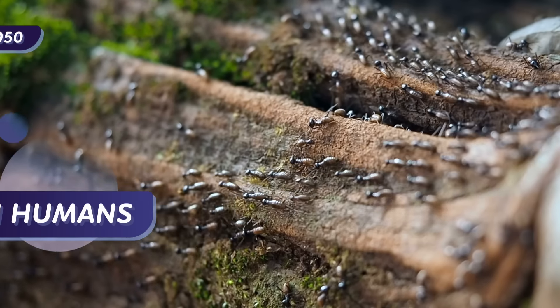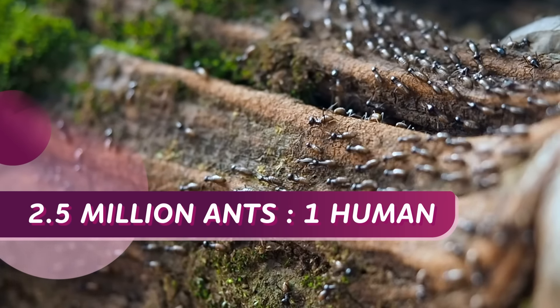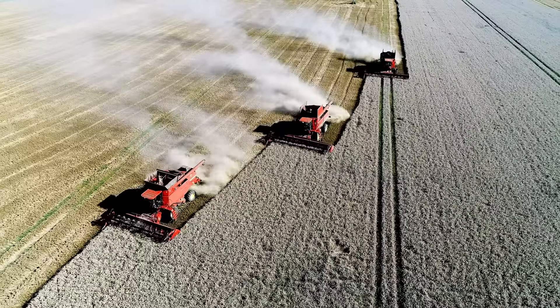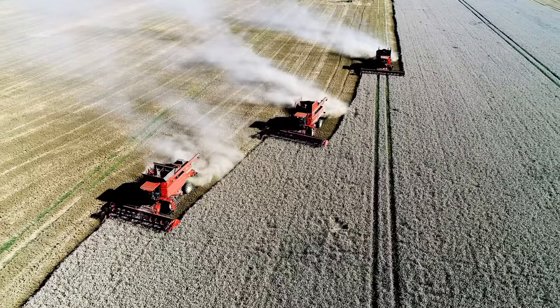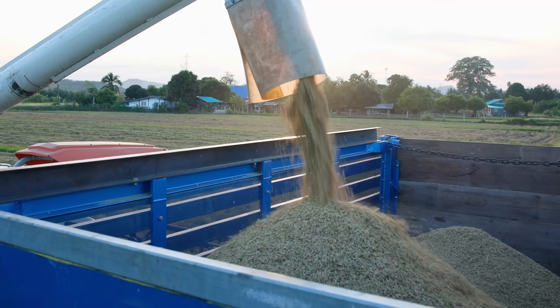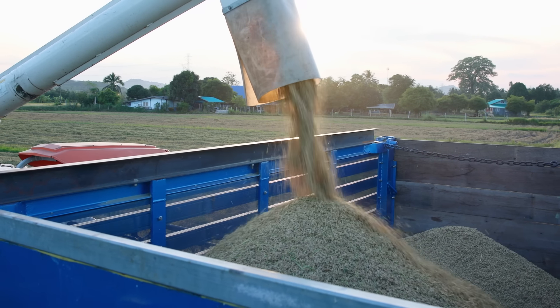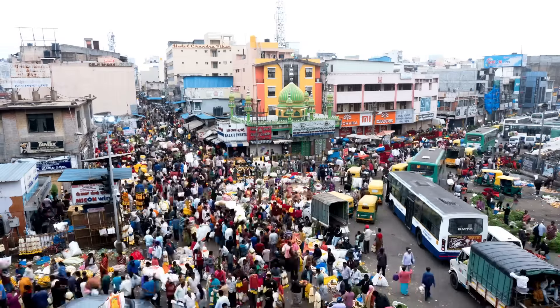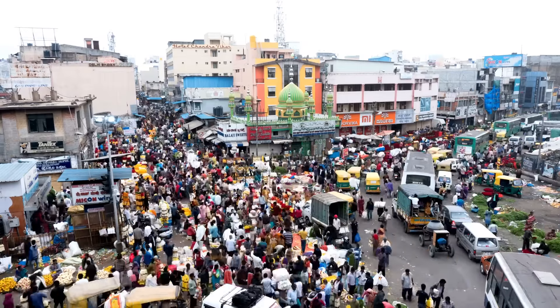And while ants have us outnumbered by about 2.5 million to 1, there's still a lot of mouths to feed. On average so far, agricultural production has risen to meet the growing demand year after year. But scientists have identified that this average annual increase in food production has begun to plateau. That means we're not on track to produce enough food to feed everyone in an increasingly crowded world.